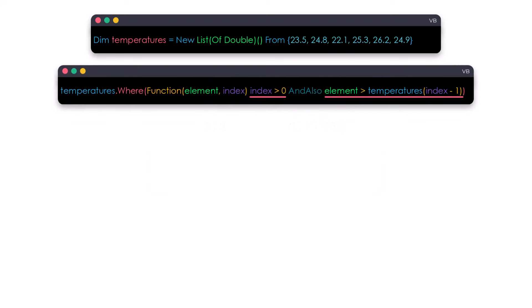The query to achieve this is as follows. The condition consists of two parts. The first part checks if the index is greater than zero — I don't want to check the first element in the sequence because there is no element before it. The second part compares the current element with the previous one, using the list variable with index minus one to get the previous element. In this way I check each element against its previous element, and once both parts of the condition are true, the element is selected as output.